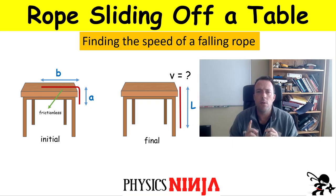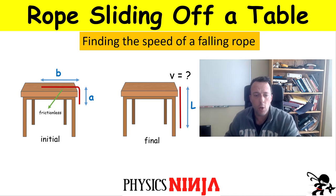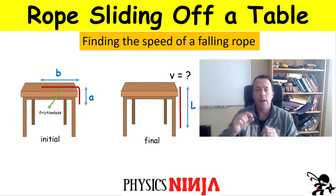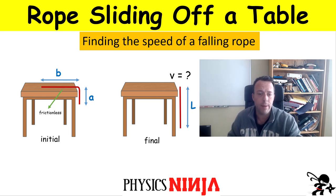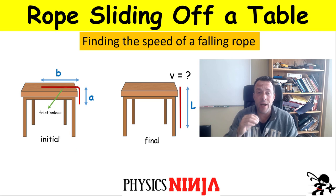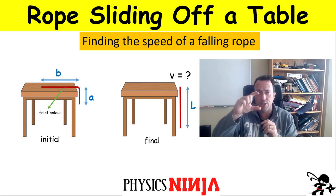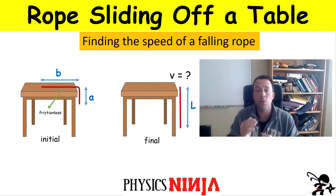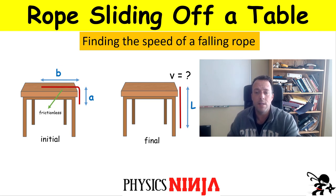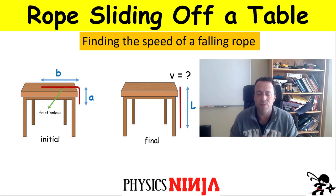Hi everybody, Physics Ninja. Today what I want to do is look at a problem of a rope sliding off a frictionless table. We have a rope that has a length equal to L. A little bit is hanging off the table, denoted by the distance A. The rest of the rope is sitting on the table at rest. If I let this system go from an initial velocity equal to zero, it's going to speed up because there is a force of gravity acting on that section of rope A hanging off the table. The question is: how do I find the speed of the rope once it's completely off the table and in free fall?